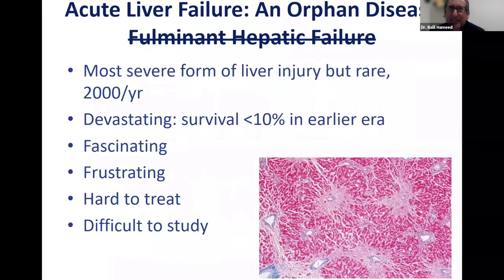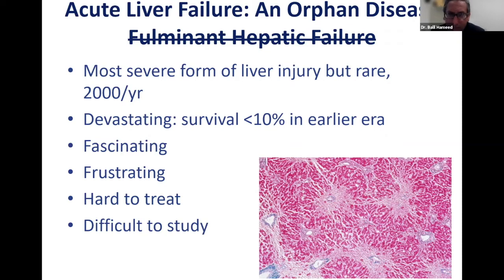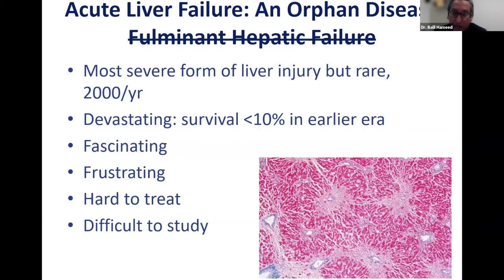Acute liver failure is considered an orphan disease — it's a rare event. Even in the U.S. we see about 2,000 cases per year, but this is one of the most severe forms of liver injury. It's very important to identify these individuals because if you don't manage them well, they can get really sick and die from liver disease.